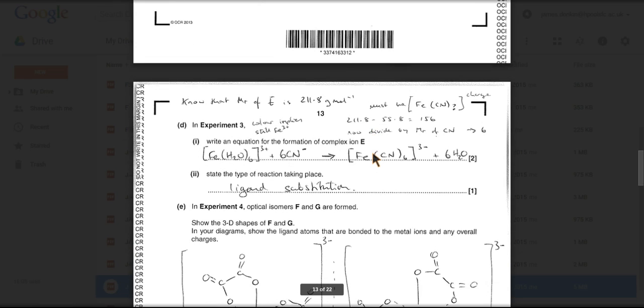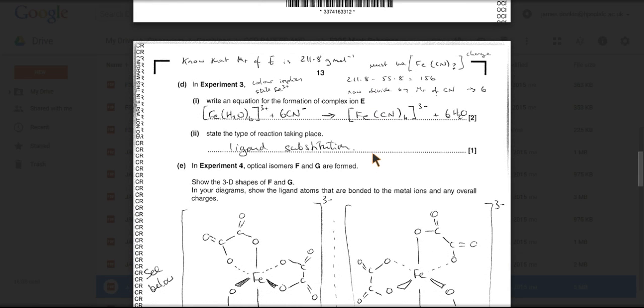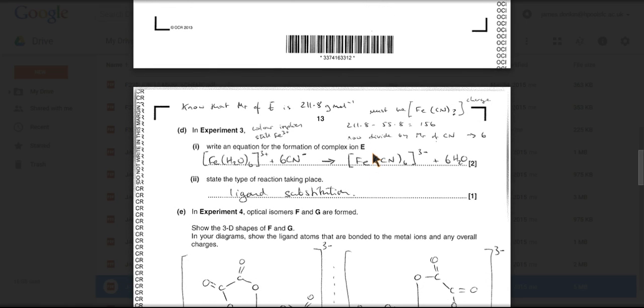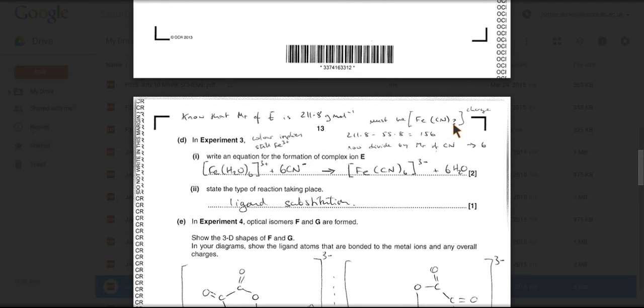And then it gets quite tricky. Now we know that the Mr is 211.8, so it's going to be Fe(CN) something, and we know from the yellow color that it's iron(III). So what I've done is I've taken the Mr, I've taken 55 away from the Mr, that leaves 156.